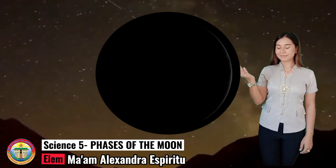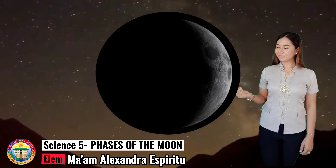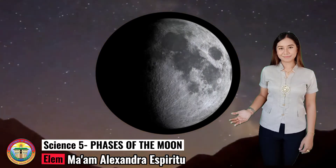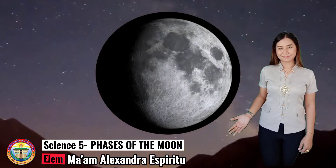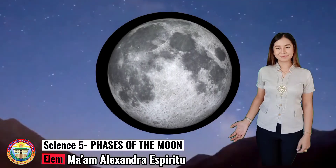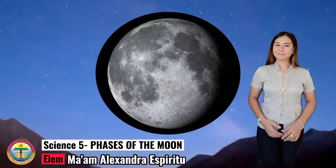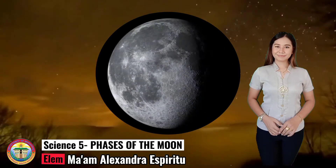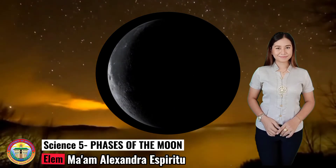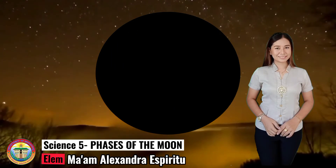Let's take a recap of the eight different phases of the Moon: New Moon, Waxing Crescent Moon, First Quarter Moon, Waxing Gibbous Moon, Full Moon, Waning Gibbous Moon, Last Quarter Moon, and Waning Crescent Moon.